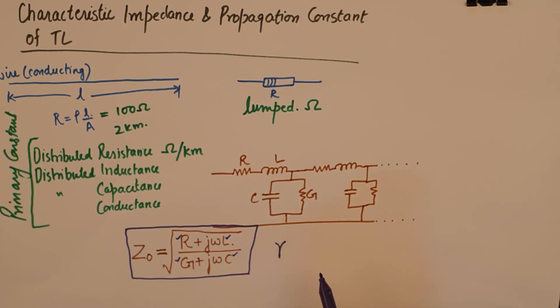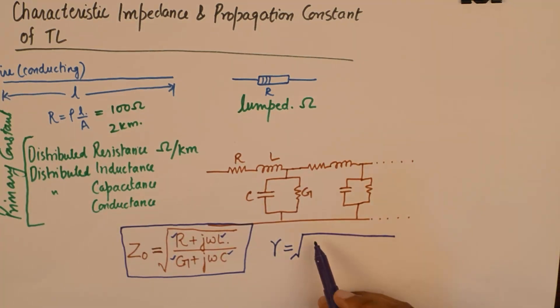And on the other hand, the second important characteristic parameter propagation constant of a transmission line is given by gamma. And it can be expressed in terms of the primary constants as R plus J omega L and G plus J omega C.